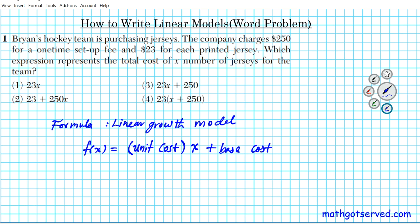This is the formula we're going to use to generate our linear model. Looking at the problem, can you identify the unit cost? For jerseys, it says $23 for each jersey printed, so each additional jersey costs $23. That's our unit cost.